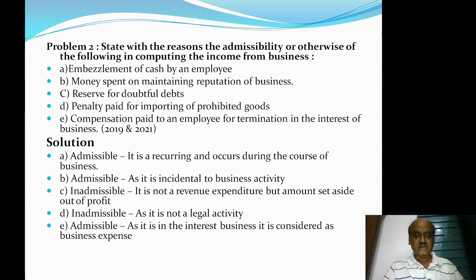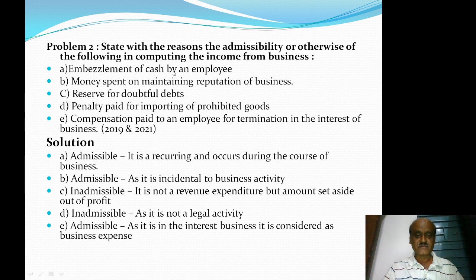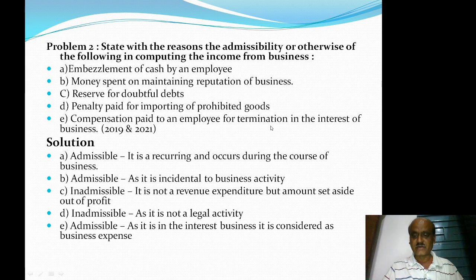The second problem: state with reasons the admissibility or otherwise of the following in computing income from business. First, embezzlement of cash by an employee. Second, money spent on maintaining reputation of business. Third, reserve for doubtful debts. Fourth, penalty paid for importing prohibited goods. Fifth, compensation paid to an employee for termination in the interest of business.